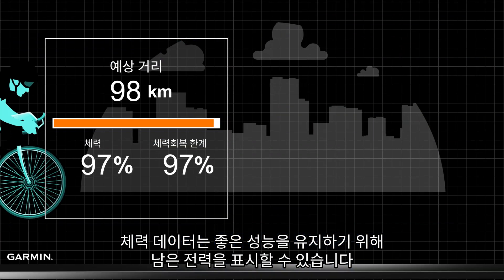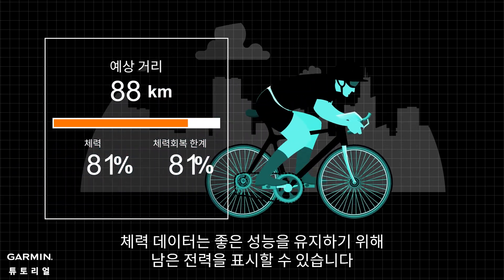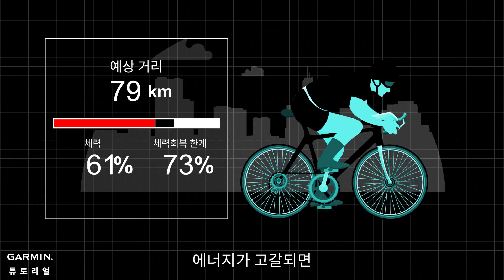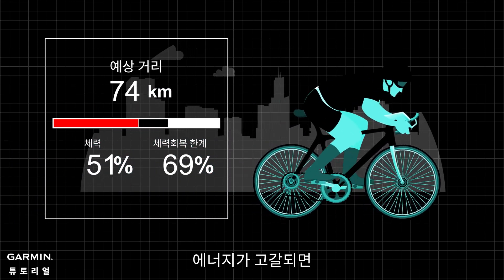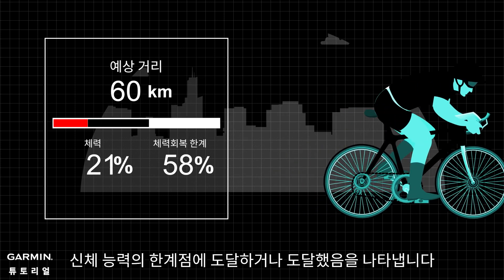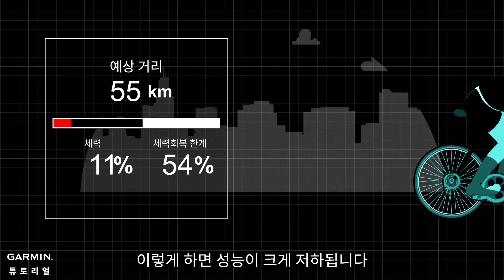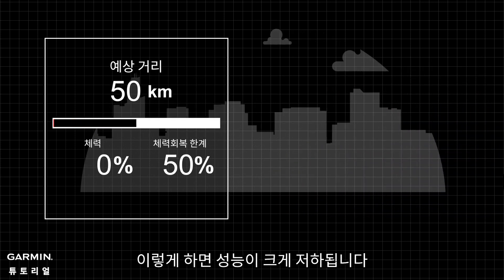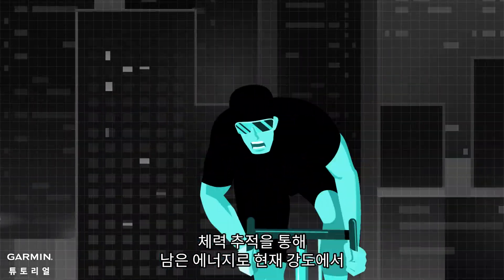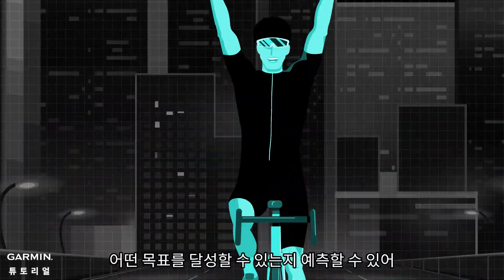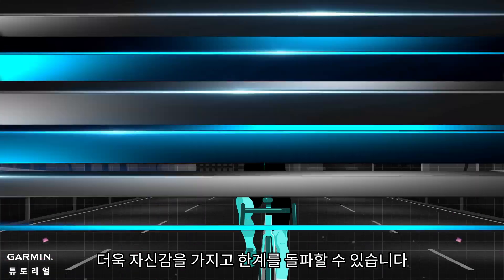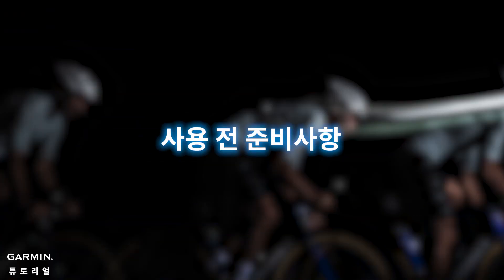The stamina data can display the remaining power for maintaining good performance. If your energy is depleted, it indicates you are approaching or reaching the threshold of your physical capacity, which will significantly reduce your performance. Through stamina tracking, you can predict what goals you can achieve at the current intensity with the remaining energy, allowing you to break through limits with more confidence.